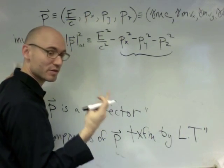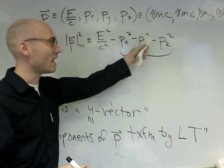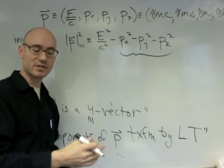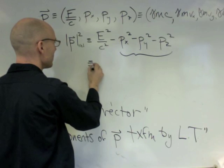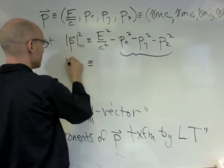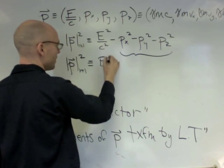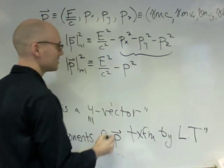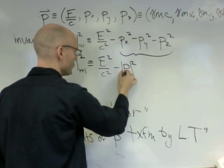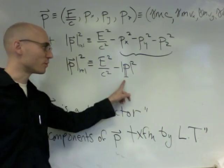The momentum of the three momentum, the three vector momentum, is Px, Py, Pz, and its magnitude is Px squared plus Py squared plus Pz squared. So we can write this magnitude, or this invariant, as E squared over C squared minus P squared.